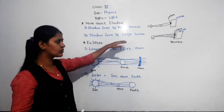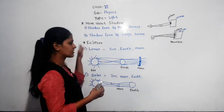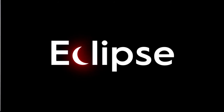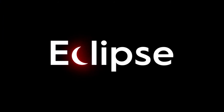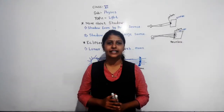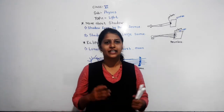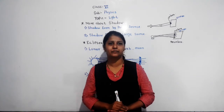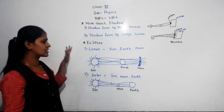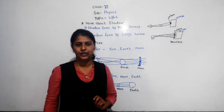Related to the concept of shadow, there is a natural phenomenon called an eclipse. Eclipse is an example of the natural formation of a shadow. We have already discussed lunar and solar eclipse in class 5. There are two types of eclipse: lunar eclipse and solar eclipse.